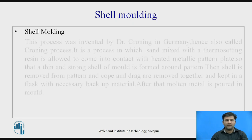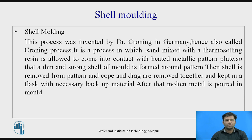What do you mean by shell moulding? This process was invented by Dr. Kroning in Germany, and hence is also called the Kroning process. It is a process in which sand mixed with thermosetting resin is allowed to come in contact with a heated metallic pattern, forming a thin and strong shell of the mould around the pattern. The shell is removed, cope and drag are kept in a flask with necessary backup material, and then molten metal is poured.